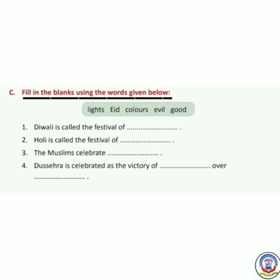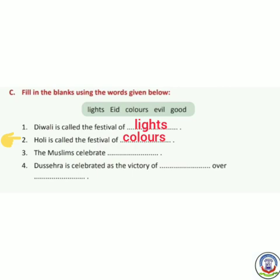Now fill in the blanks using the words given below. Number 1: Diwali is called the festival of — Diwali is the festival of Lights (L-I-G-H-T-S). Next, Holi is called the festival of — Holi is the festival of Colors (C-O-L-O-U-R-S). Next, the Muslims celebrate — the correct answer is Eid (E-I-D).